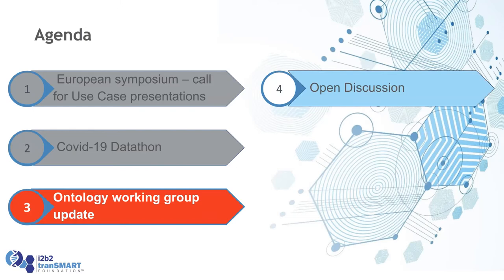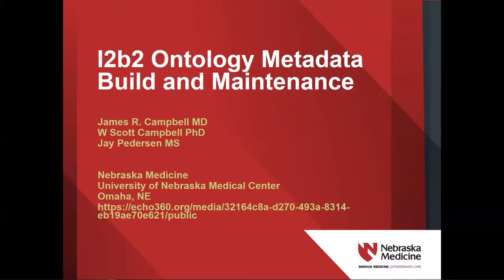Now I'll invite Jim Campbell, who's the lead of the Ontology Working Group. Good morning. I'd like to update the group on a proposal that we're working on right now for tooling in support of i2b2 metadata. For those of you who may not be intimately involved with i2b2 — most times people call them ontologies, but basically they are metadata sets that organize the function of the i2b2 client, specifically supporting searching, categorizing, and counting data located in the observation facts star schema.